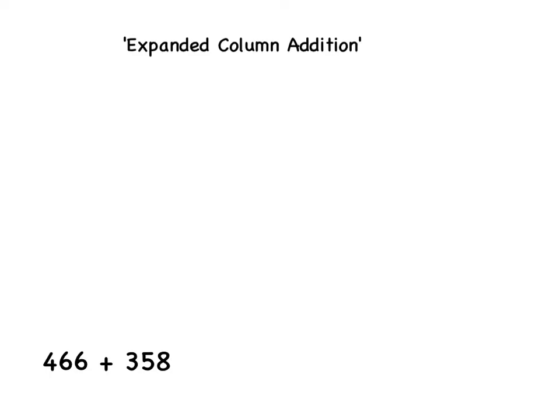To add these using expanded column addition, you must partition the numbers into their hundreds, tens and units. Let's start off with 466. Looking at that number, we can use our knowledge of place value to break it down into the hundreds, tens and units.